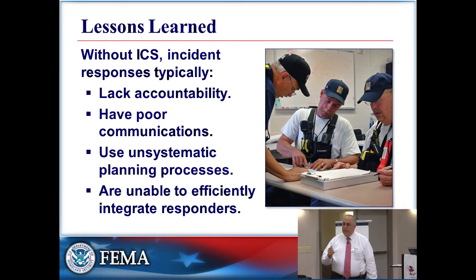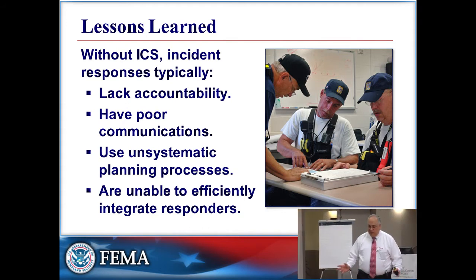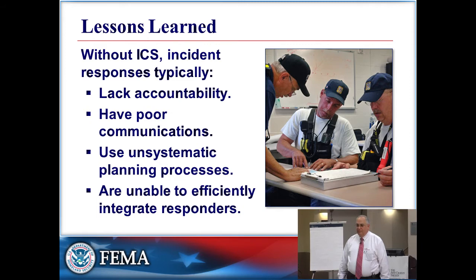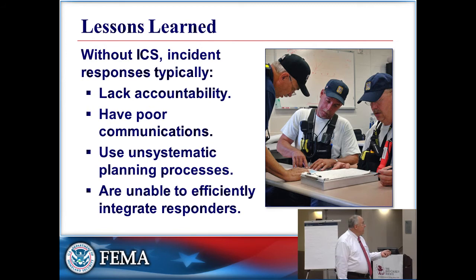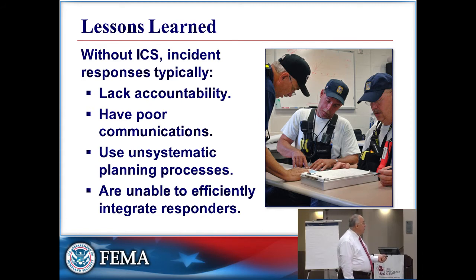Poor accountability — how do you account for people and resources? How do you make sure jobs are getting done? Without ICS, you have poor communications. Agencies doing whatever they want are not going to talk to each other. What is the one thing everybody always complains about in large-scale events? Communication. And it's not always the hardware — sometimes people just don't get the right information out through the right channels.